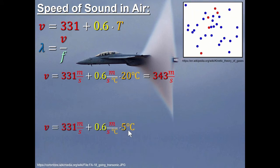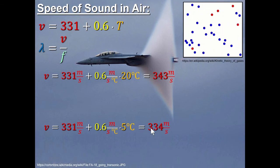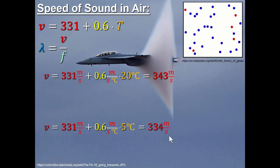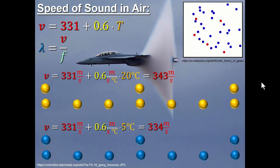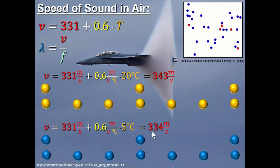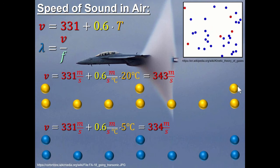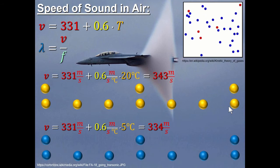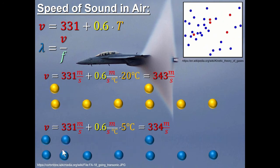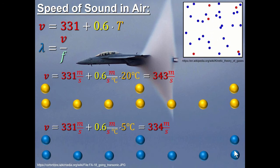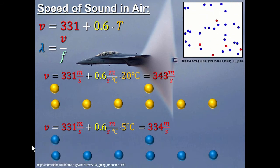An interesting thing about the speed of sound is that it is only related to the temperature of the air, not the density. The orange balls represent warm air molecules and the blue ones colder air. A row with very few molecules and a row with many molecules are compared — as the wave passes through, if molecules are traveling fast the wave gets there sooner, if slower it takes longer. But it didn't matter that there were fewer molecules or less dense air; the wave traveled at the same speed.